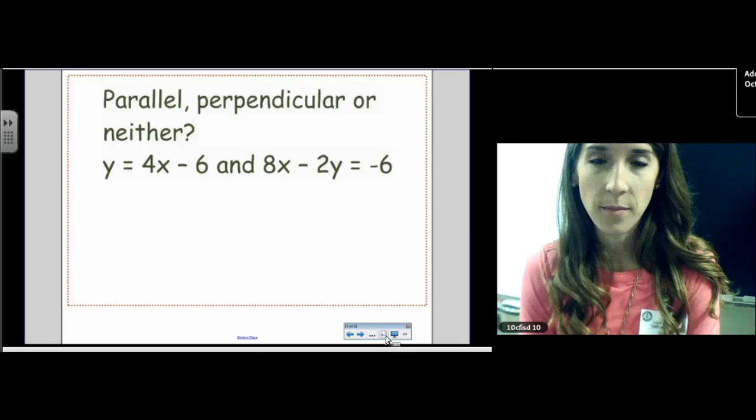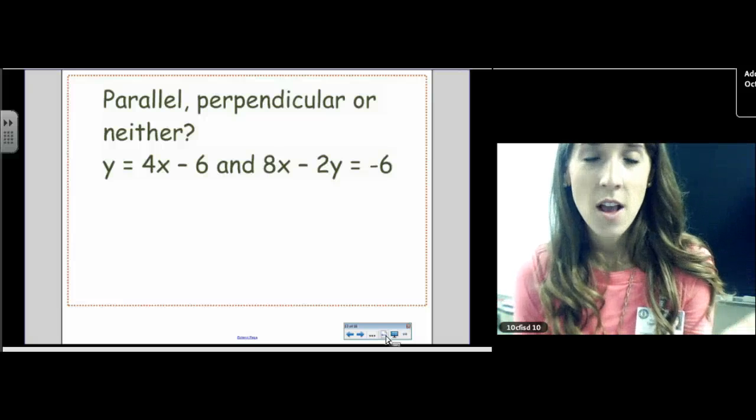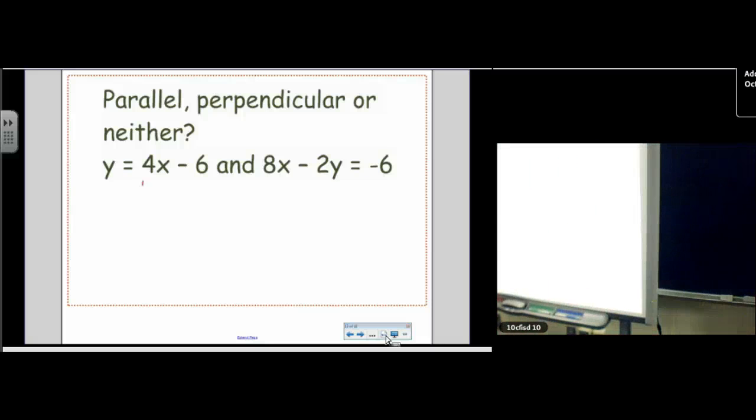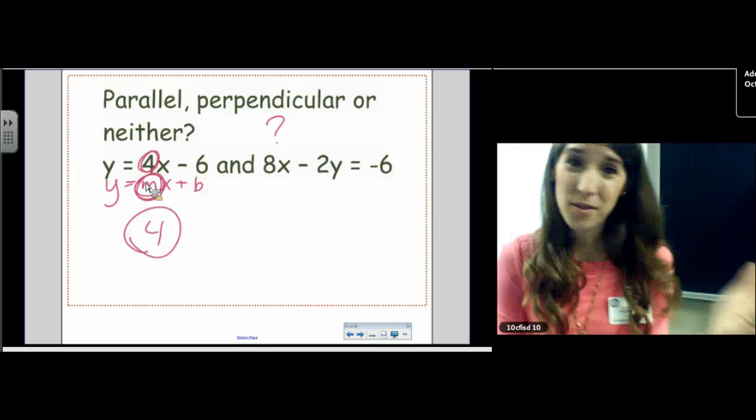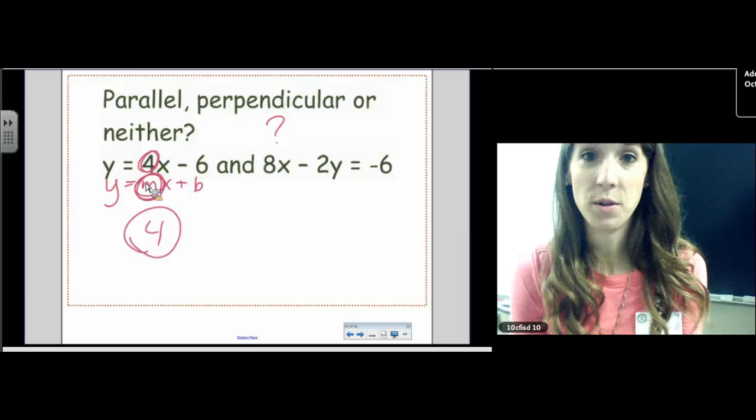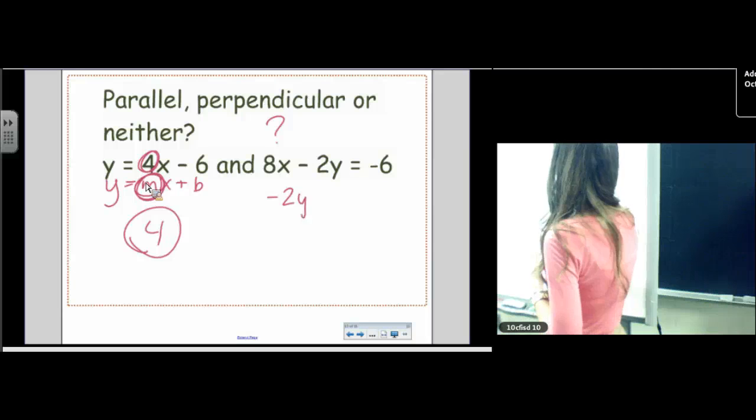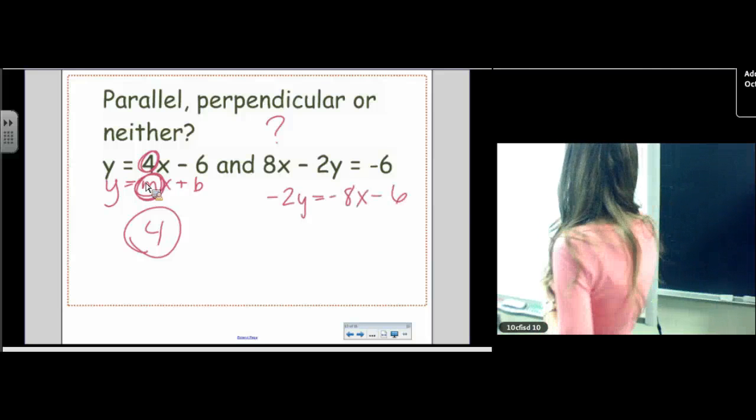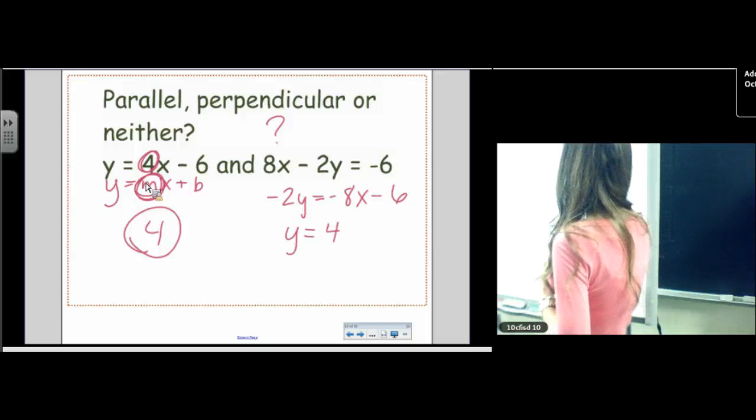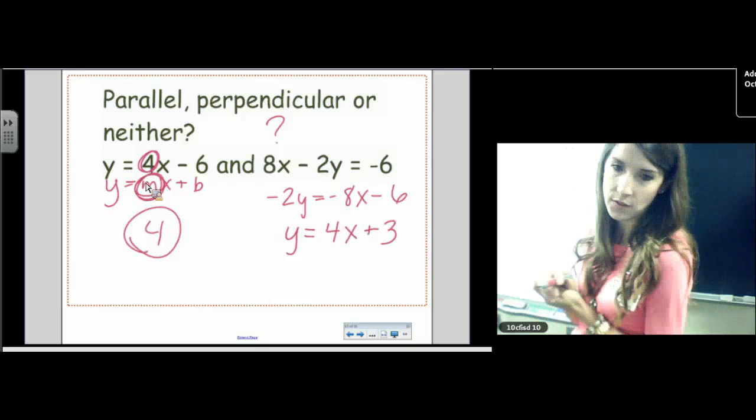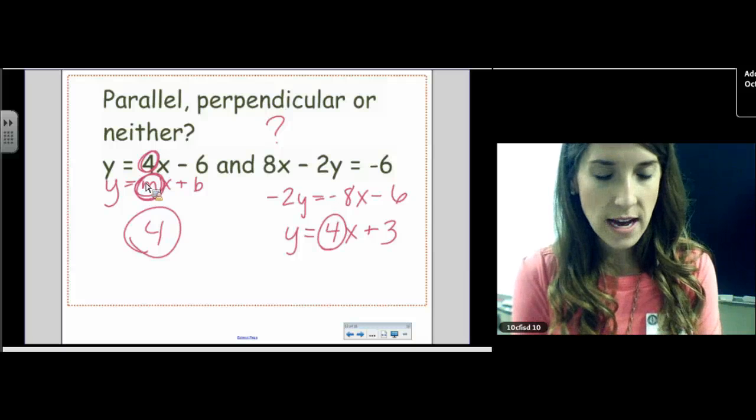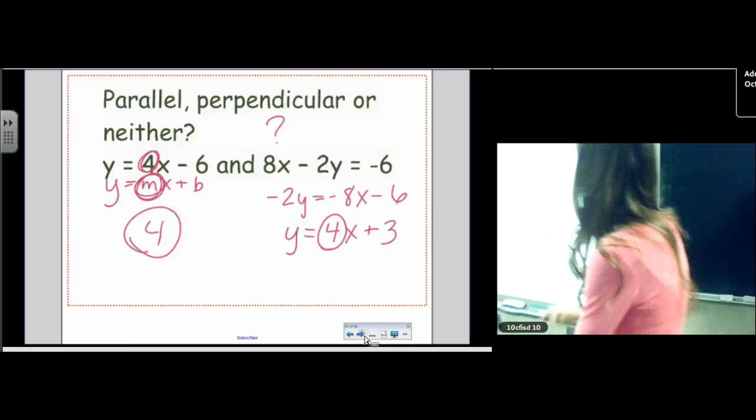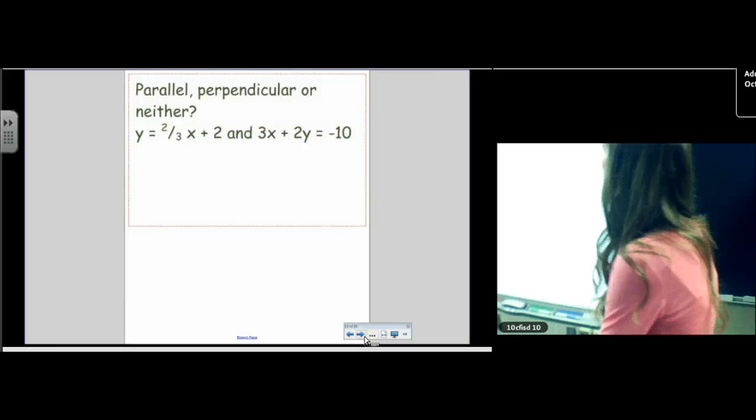Are these lines parallel, perpendicular, or neither? Now, we haven't talked a whole lot about the equation of a line. But you probably remember from last year, Y equals MX plus B, right? Where M is the slope. So the slope of this line is four. What's the slope of this line? Well, we don't know the slope of that line until we solve for Y. You don't know the slope until you solve for Y. So we have to move the 8X over. Negative 2Y equals negative 8X minus six. And then divide everything by negative two. Y equals four X plus three. I divided everything by negative two. So the slope of this one's four. The slope of this one's four. So are they parallel, perpendicular, or neither? Good job. They're parallel.